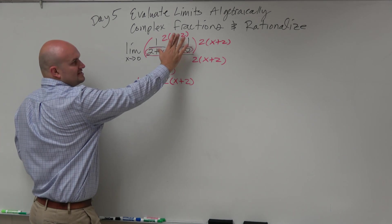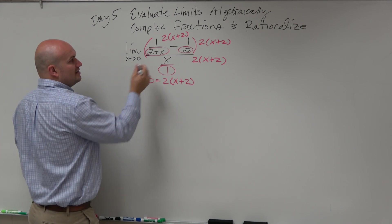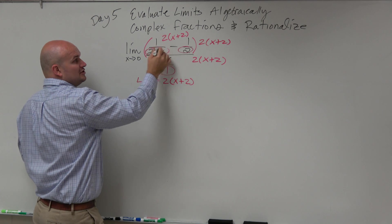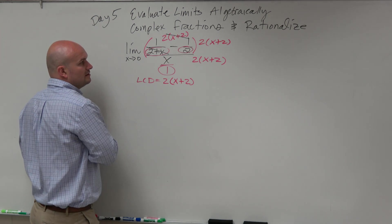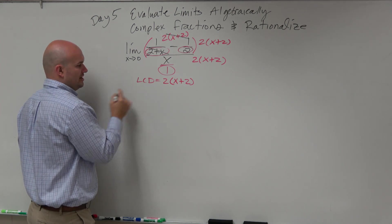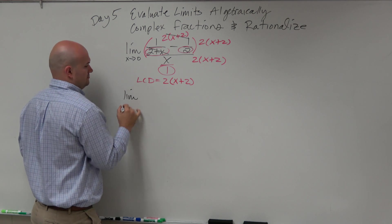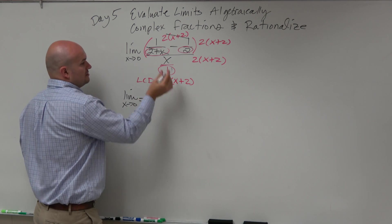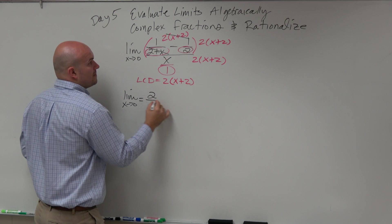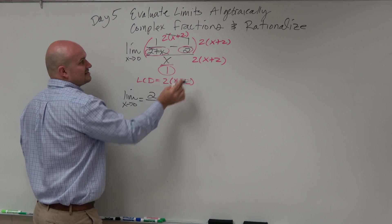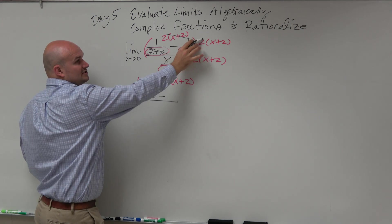So what happens when I multiply 1 over 2 plus x times 2 times x plus 2? Well, again, these are the same. They're just switched around. So since this is the denominator that's in the numerator, they divide out to each other. So that's going to just leave me with 2. And then minus. Now here, you can see that the 2's divide out.